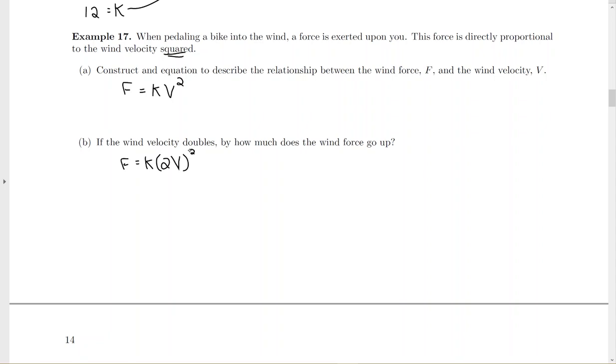All right, now we're going to use our laws of exponents, square the two, square the V. And normally we put the number in front, so I have force equals four KV squared. Notice the original was KV squared, but when I doubled the velocity here, I ended up putting a four in front of that. So I've actually quadrupled what I started with. Or you can say that it increases by a factor of four, or you could say it quadruples your wind force either way.